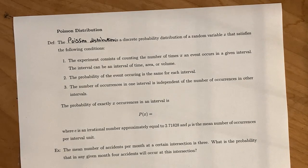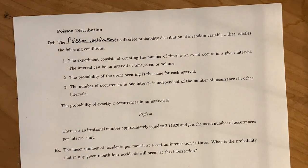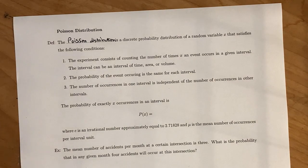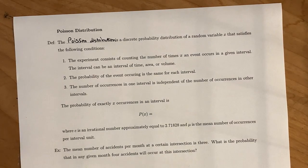The second condition is that the probability of the event occurring is the same for each interval — it doesn't matter how large the intervals are, it's still all going to be proportional. And part three, the number of occurrences in one interval is independent of the number of occurrences in another interval. That is our independence statement, which we've had in all the other distributions we looked at.